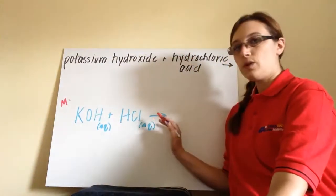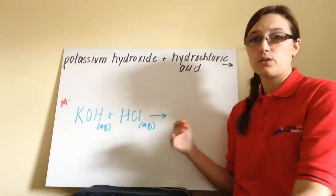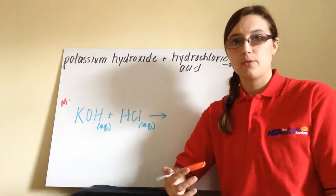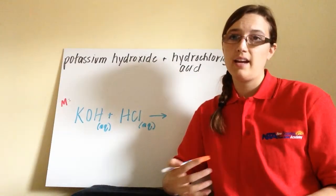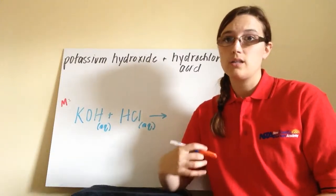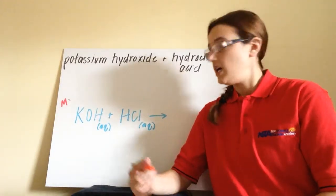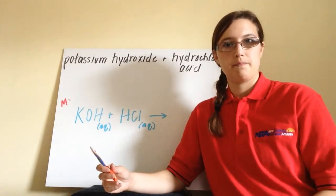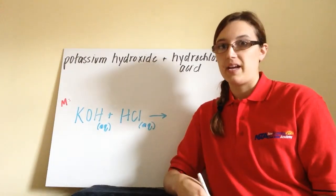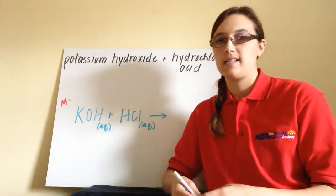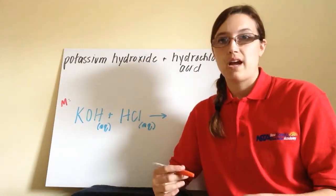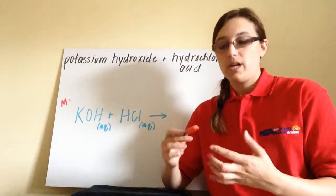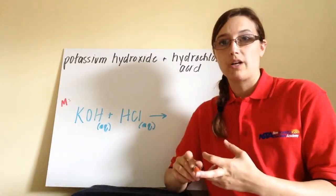Now, the first thing we need to do is figure out what goes on the right side of this arrow. This looks like a double replacement reaction, and it is, but more specifically, it's a neutralization reaction. Looking at these reactants, what might tell you that it's neutralization? Well, you have an acid being added to a base, or a base being added to an acid.